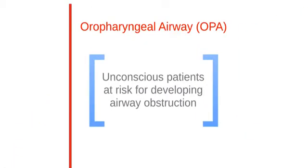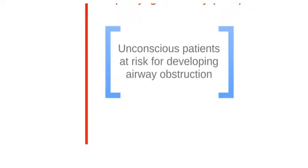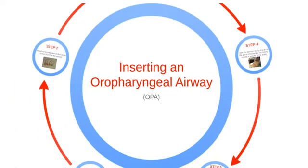The first basic airway adjunct is a device called an oral pharyngeal airway, or OPA, and it's used in unconscious patients who are at risk of developing airway obstruction. Inserting an OPA is fairly simple, with the right training.